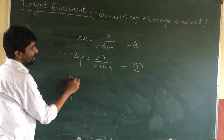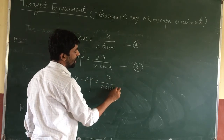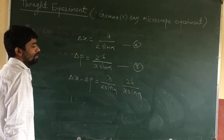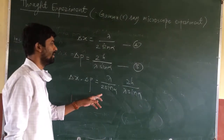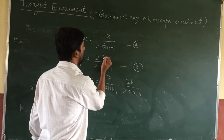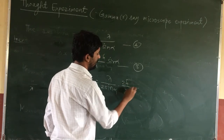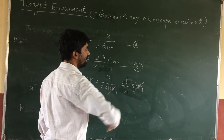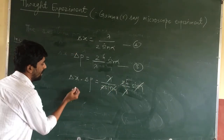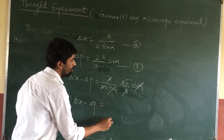Taking the product: delta x into delta p equals lambda divided by 2 sin alpha multiplied by 2h divided by lambda into sin alpha. The lambda terms cancel and the sin alpha terms cancel, giving delta x into delta p equals h.